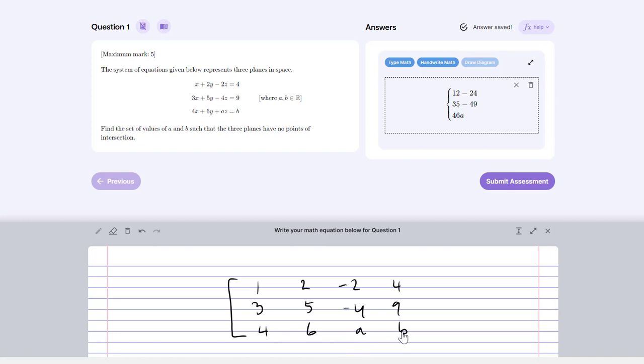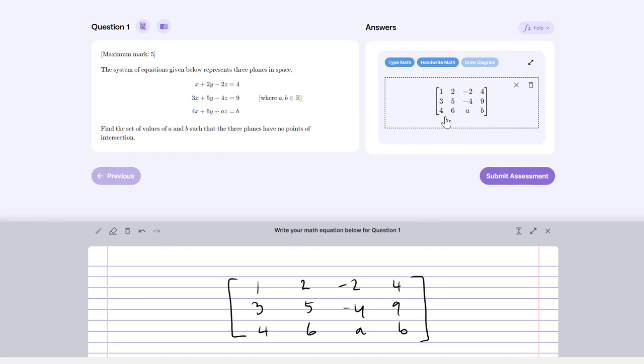Just pausing there for a minute you'll see the calculator still hasn't quite recognized what I'm doing, but as soon as I put the square bracket at the end of that it will recognize that I'm doing a four by three matrix and it's automatically come into shape with all of the correct coefficients in there.